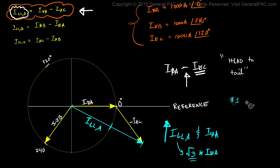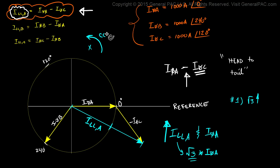So that's the first observation: our line current is the square root of 3 times larger than our phase current. Also notice that our line current has a phase shift associated with it. If all the phasors were rotating in a counter-clockwise direction, which is what they should according to international standards, we will see that the line current has a 30 degrees phase shift. So number 2: line current has a 30 degrees phase shift with respect to phase current.